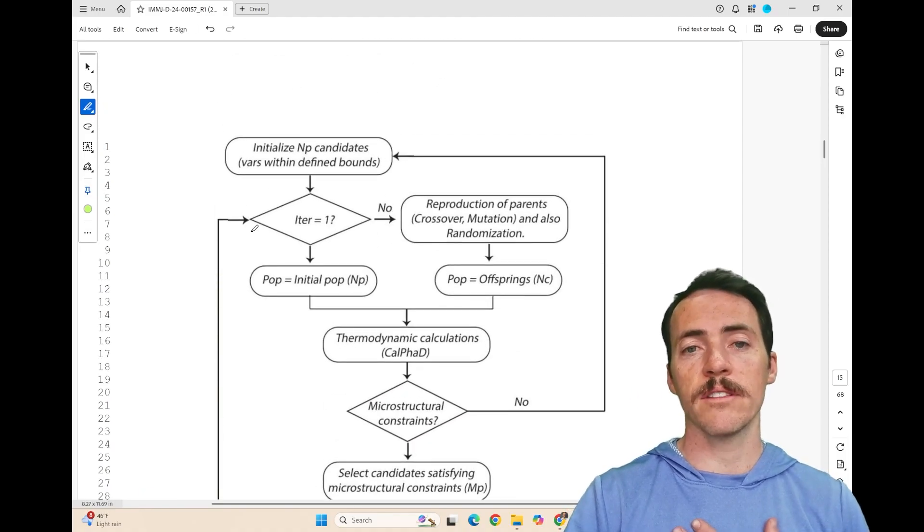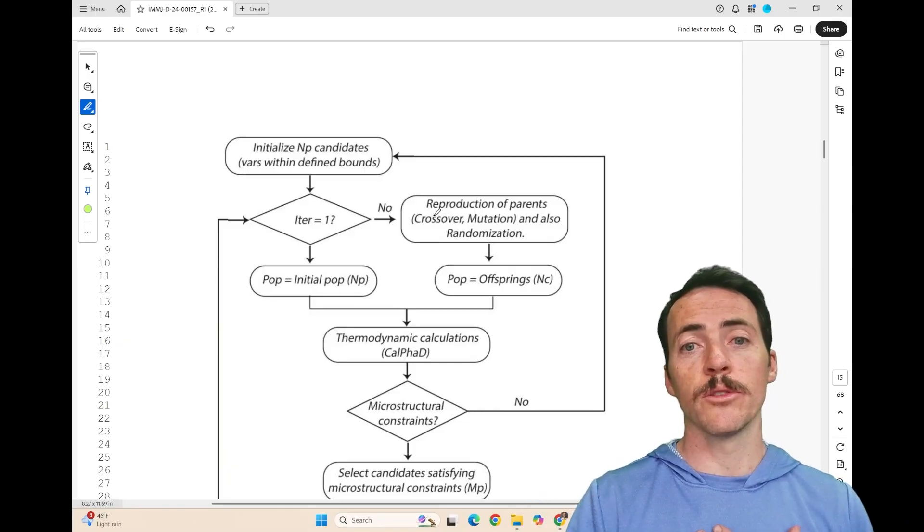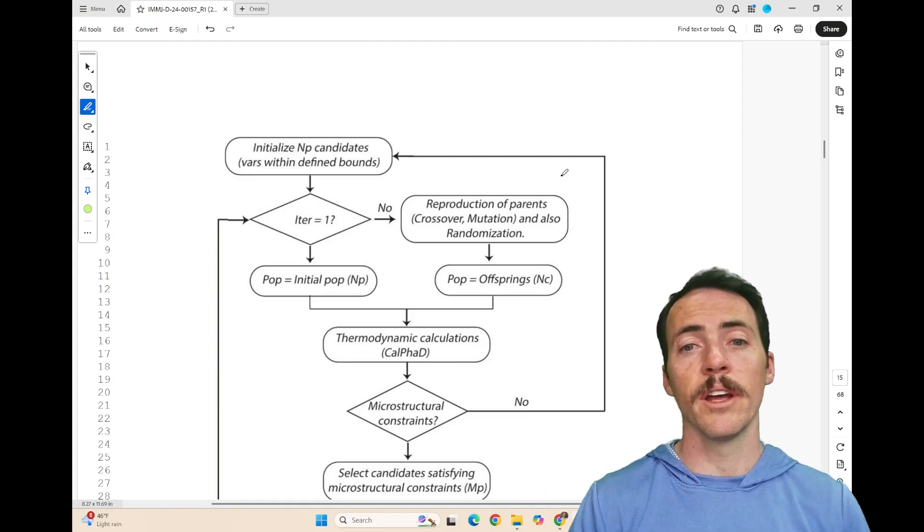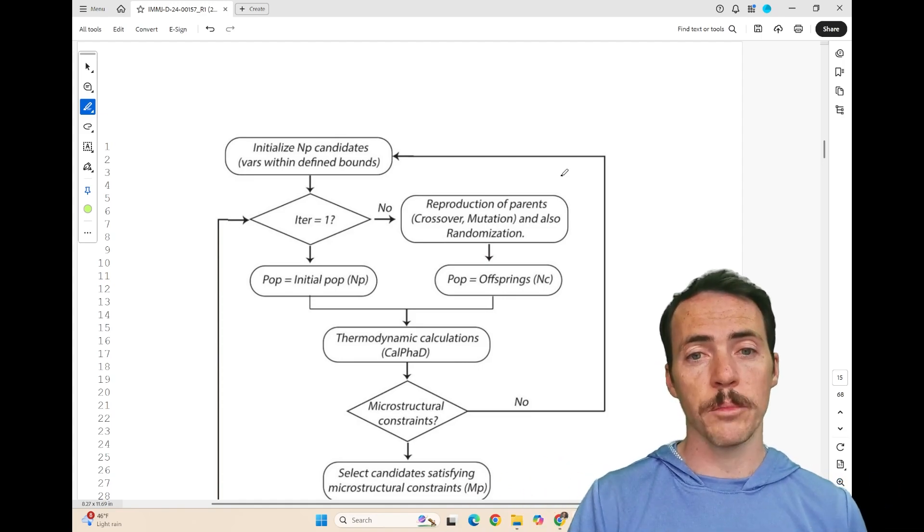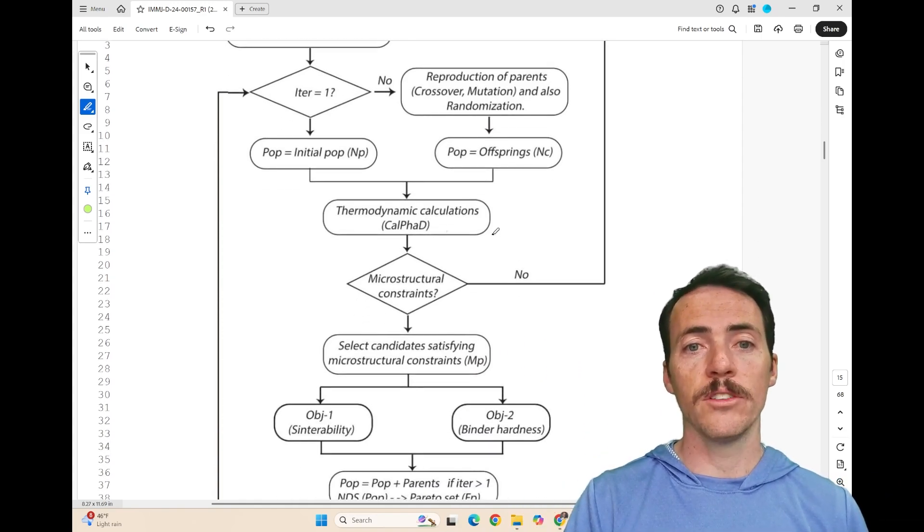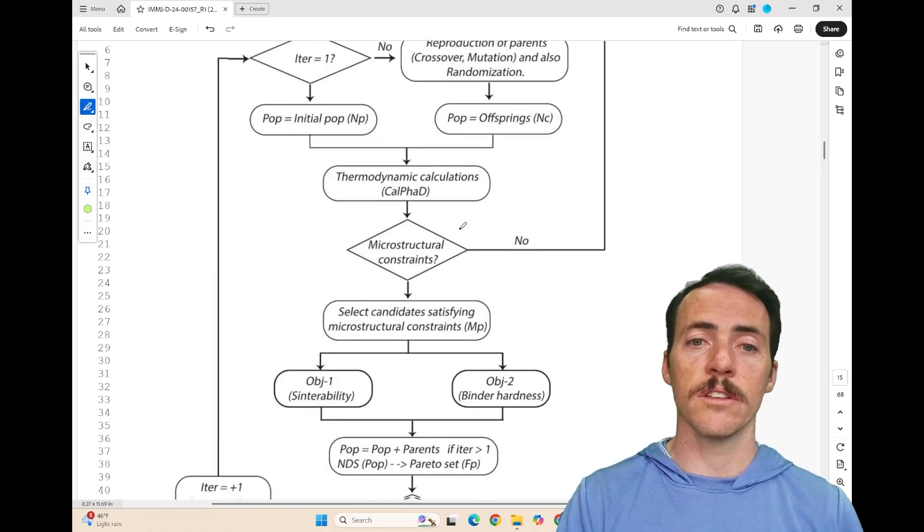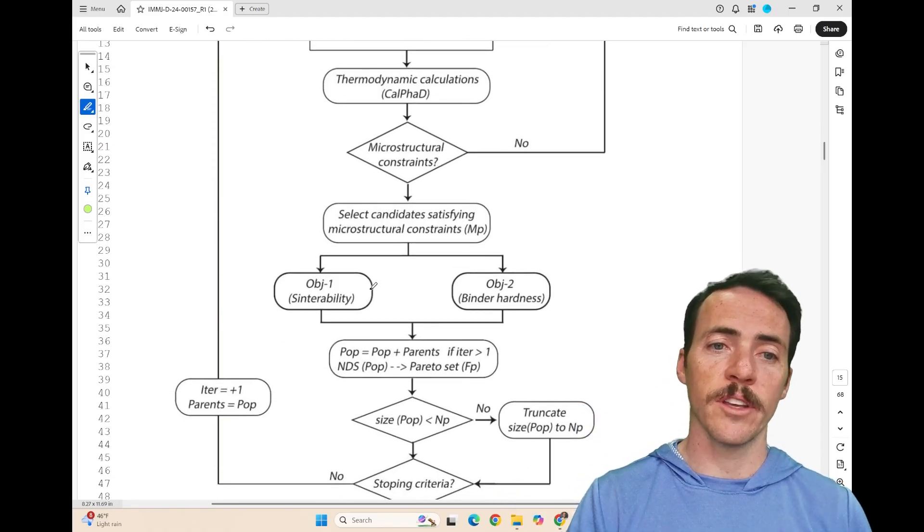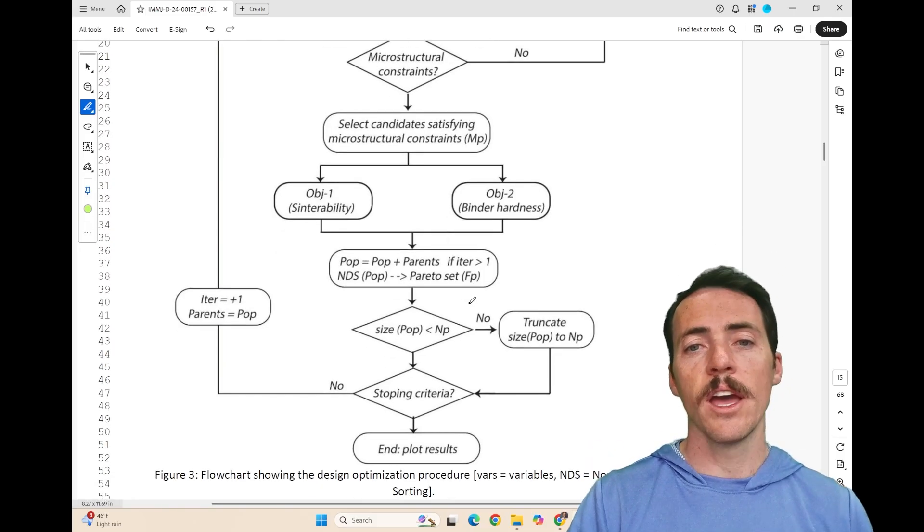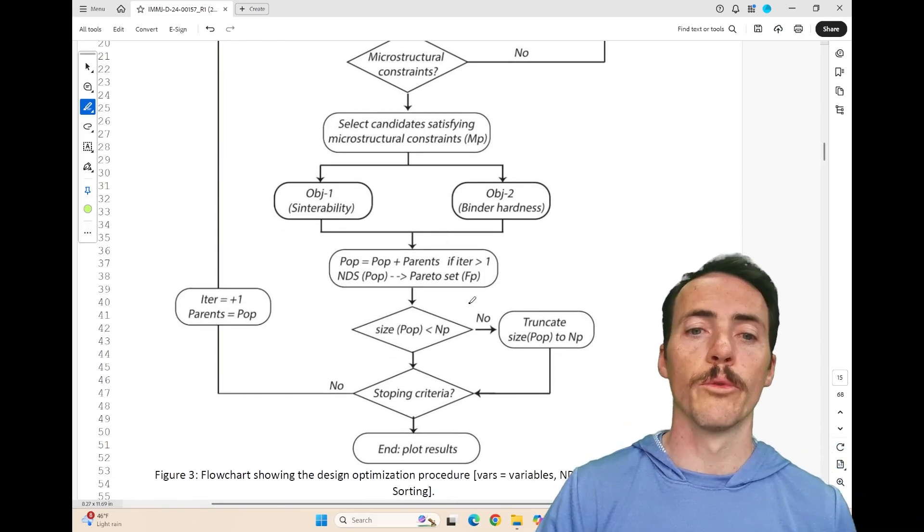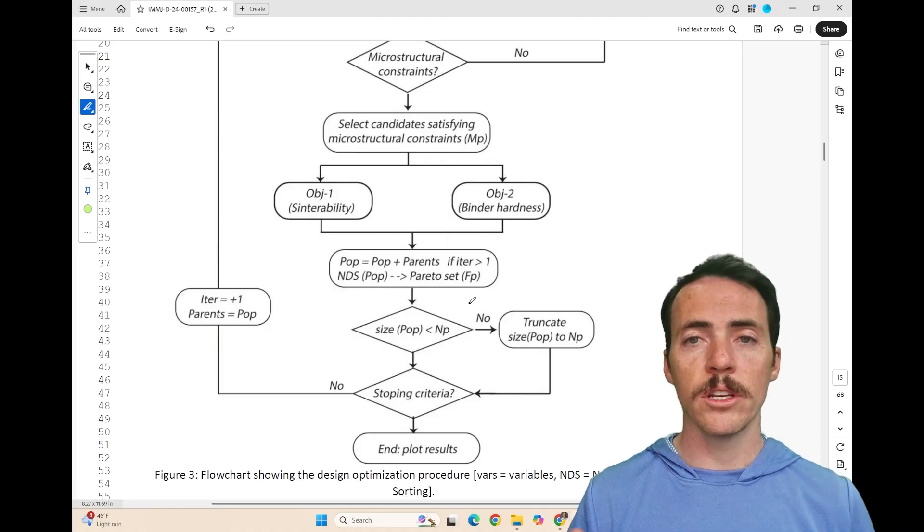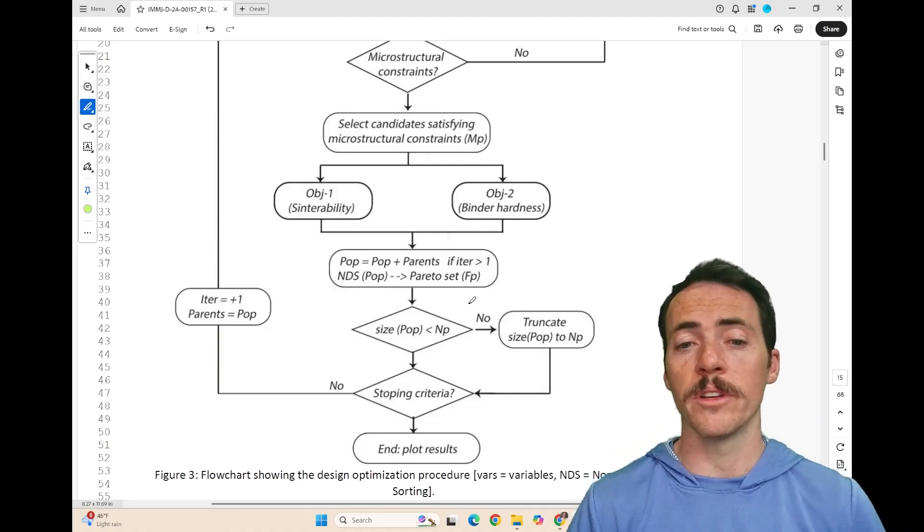Now your parents are equal to the former population and you've added to it. So at this point, you can now have the parents do crossover, mutation, randomization. This is the reproduction part, which is going to create new offsprings. You ask them, do they meet the thermodynamic calculations? If so, they've got the right phases present. Now you assess their sinterability, binder hardness, and you repeat this process until you've reached your stopping criteria in terms of the size of the population, number of iterations, or having the right properties of interest. And then you can plot these.